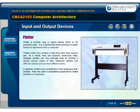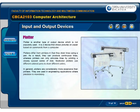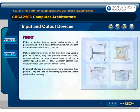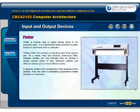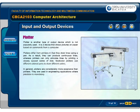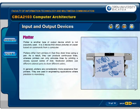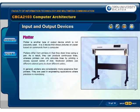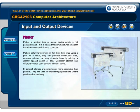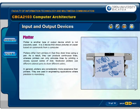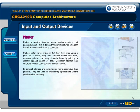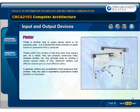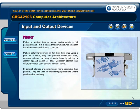A plotter is another type of output device which is not popularly used. It is a device that draws pictures on paper based on commands from a computer. Plotters differ from printers in that they draw lines using a pen; as a result, they can produce continuous lines, whereas printers can only simulate lines by printing a closely spaced series of dots. Multicolor plotters use different colored pens to draw different colors. In general, plotters are considerably more expensive than printers and are used in engineering applications where precision is mandatory.